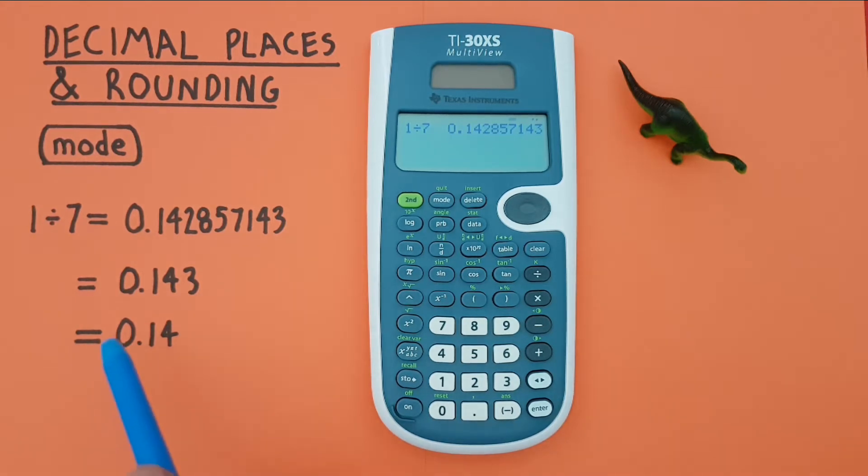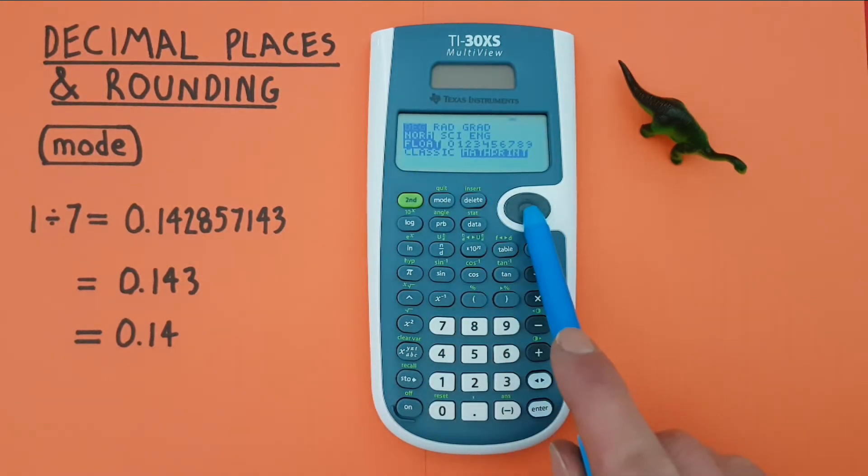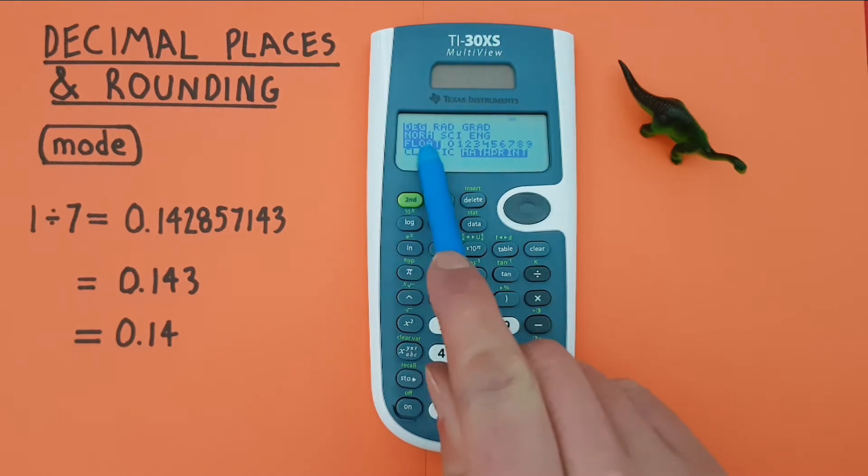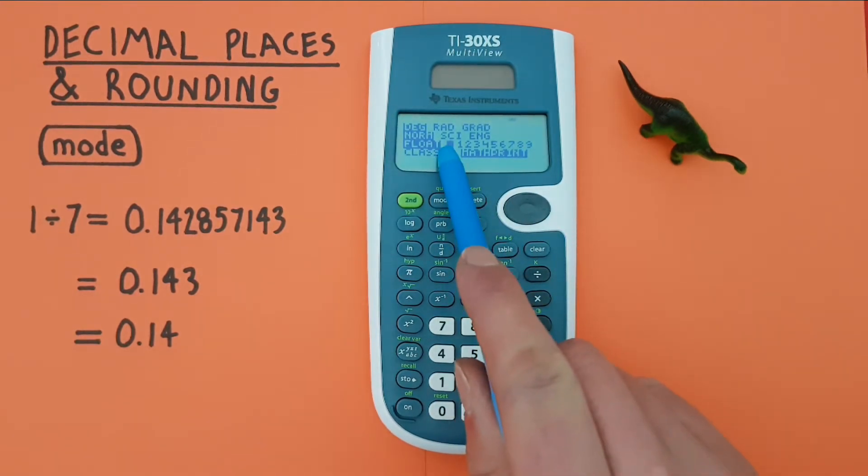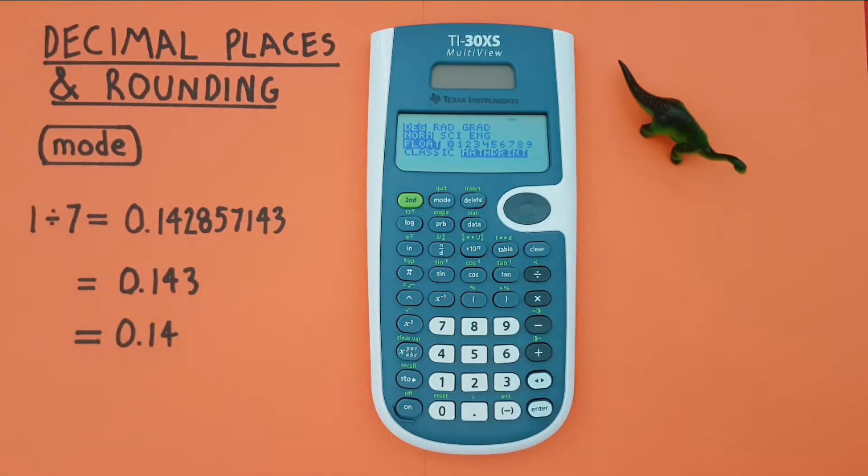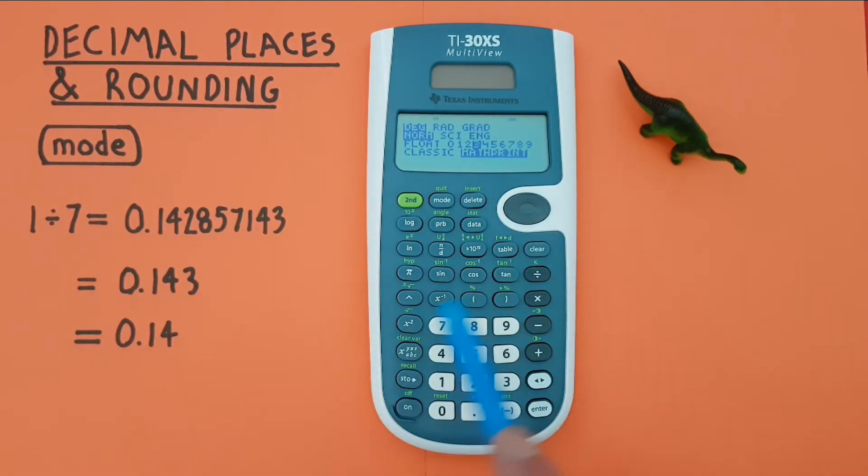But let's say we only wanted to get 3 decimal places. Well to change that we go into mode and if we scroll down twice, you'll see float is highlighted. That's that float mode we were talking about. But if we scroll to the right, we see numbers 0 to 9 and this lets us choose the number of displayed decimal places. So if we wanted 3, we'll scroll over till 3 is highlighted. There we go. Press enter.